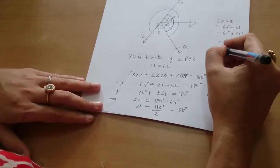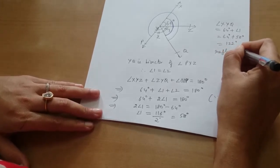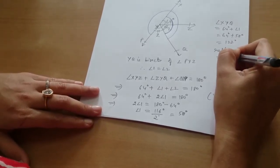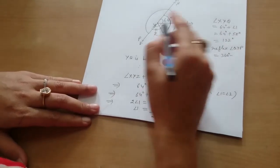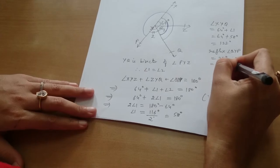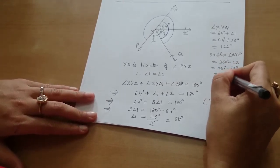And reflex of angle QYP. Reflex angle QYP is equal to 360 degrees minus angle 2. And angle 2 is 58 degrees. Therefore, the reflex is 302 degrees. Very good.